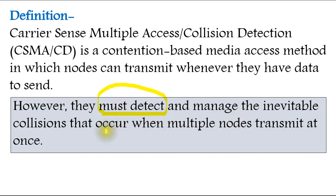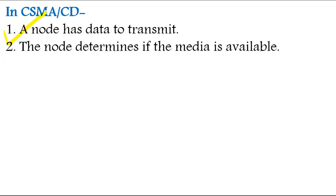Now, there are a couple of steps. First, our node has data to transmit. This will be your first step. The node determines if the media is available. Yes, it will check if that media is available or if any other node is transmitting data at the same time.